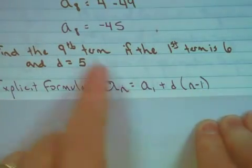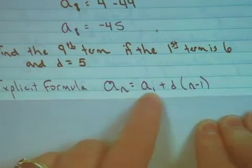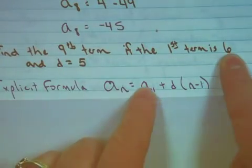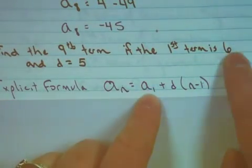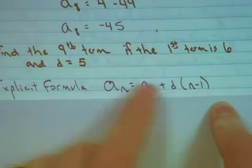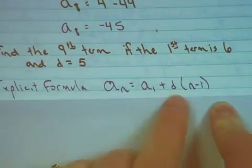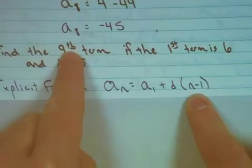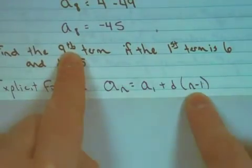I'm looking for the 9th term, so this will be a sub 9. My first term was given as 6, so a sub 1 will be 6. The common difference was given as positive 5. And again, because I'm looking for the 9th term, my n will be a 9.